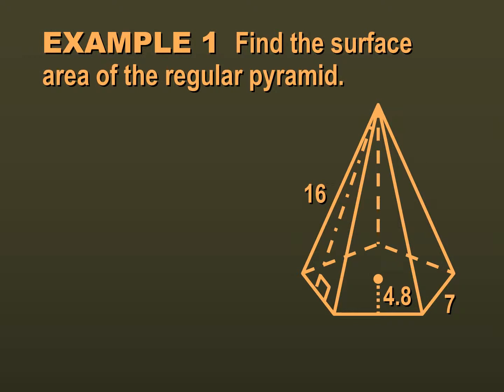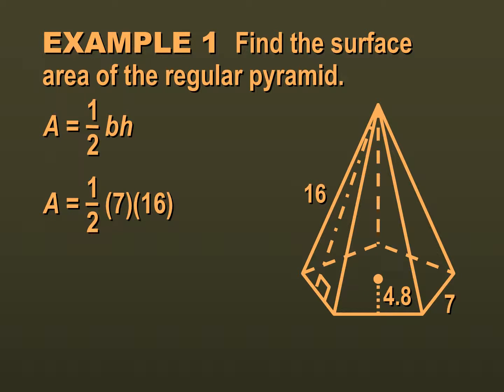Let's begin by finding the surface area of this regular pyramid. First we want to find the area of our base — this is a pentagon — but we're actually going to start with finding the area of one of the triangles. So it's going to be one half times our base, which is seven, times our height, which was 16. So one half times seven times 16, which means the area of that triangle is 56.